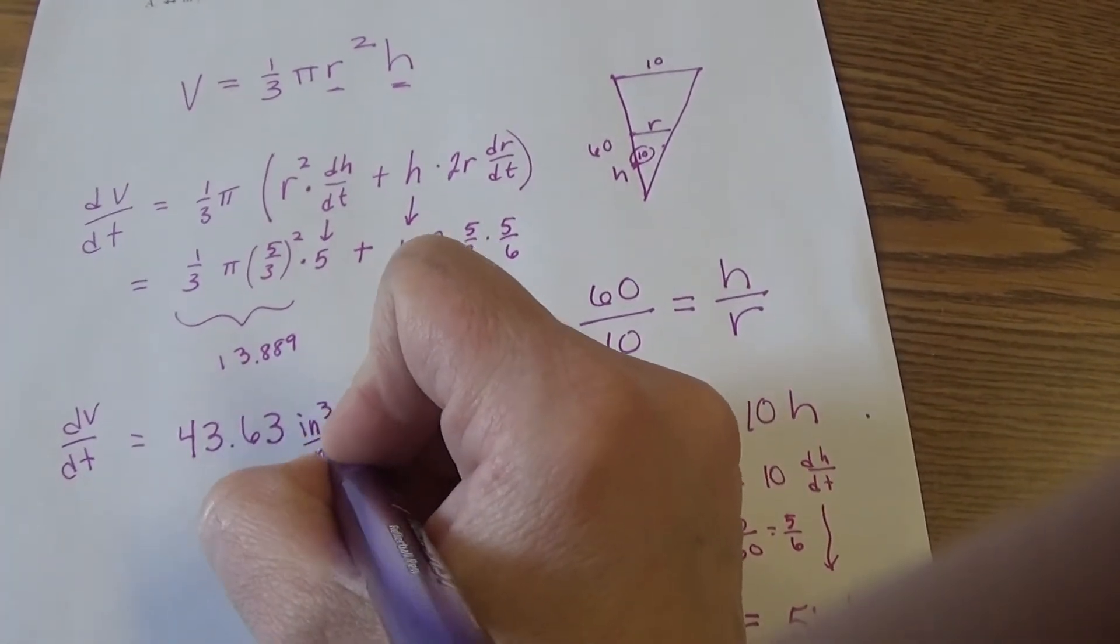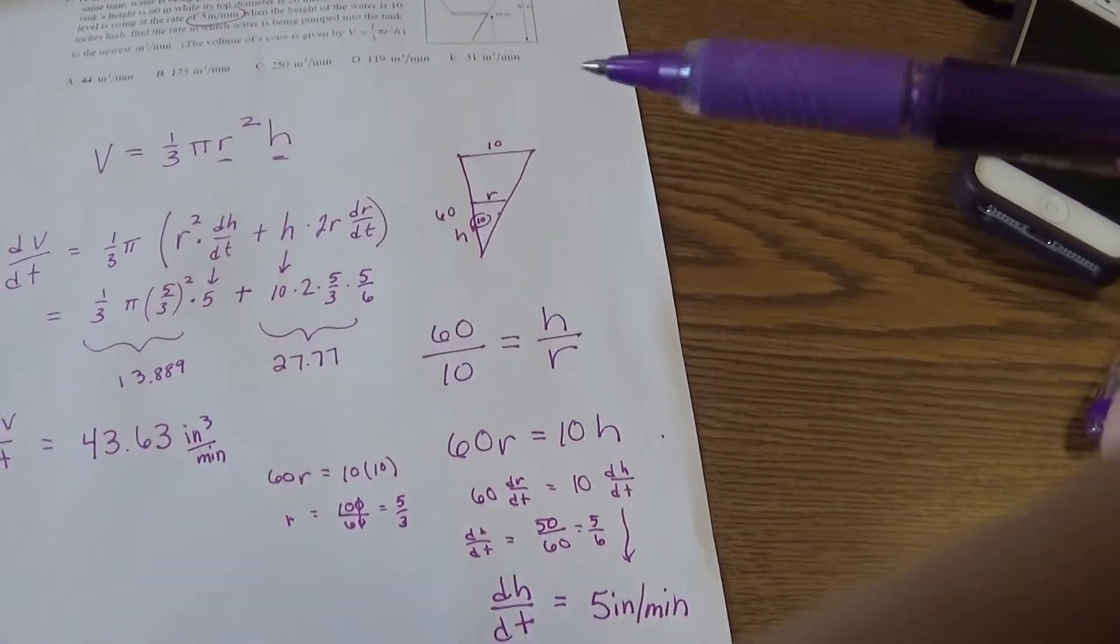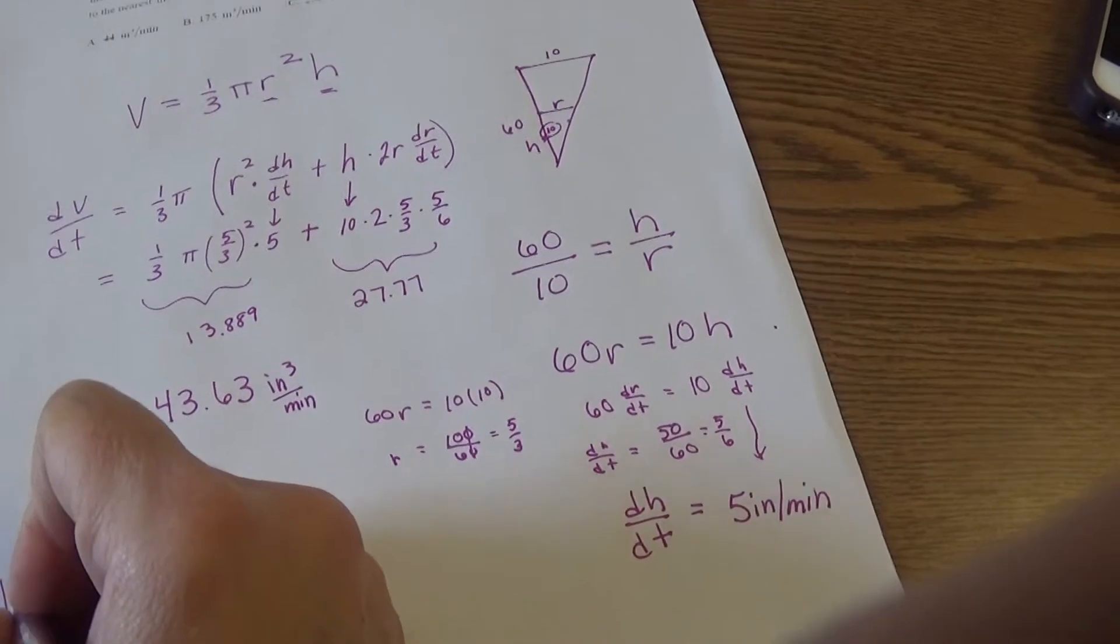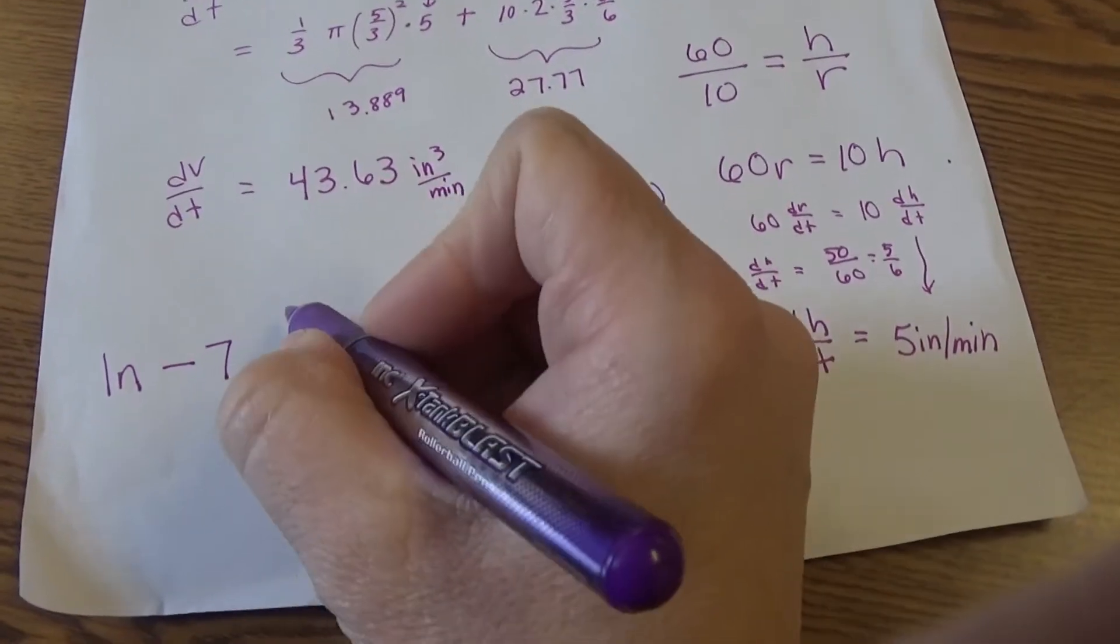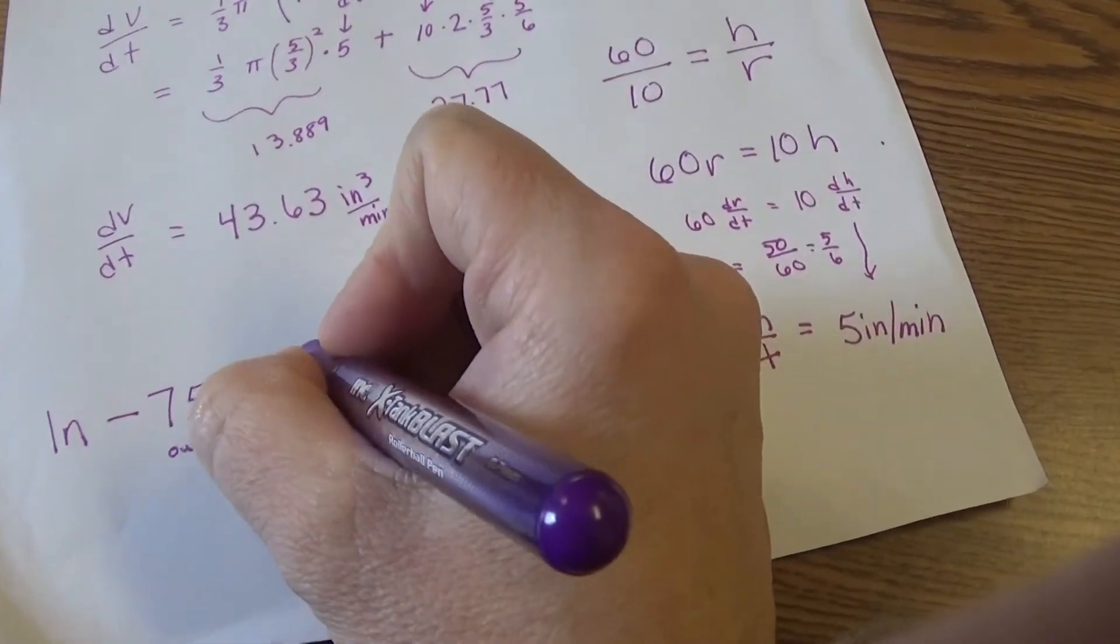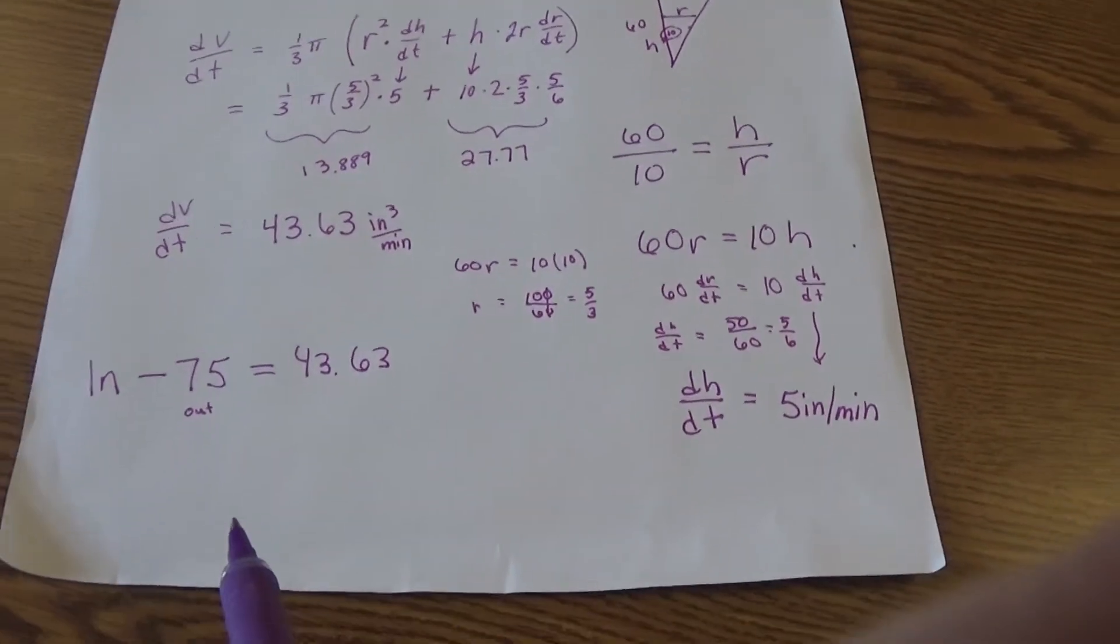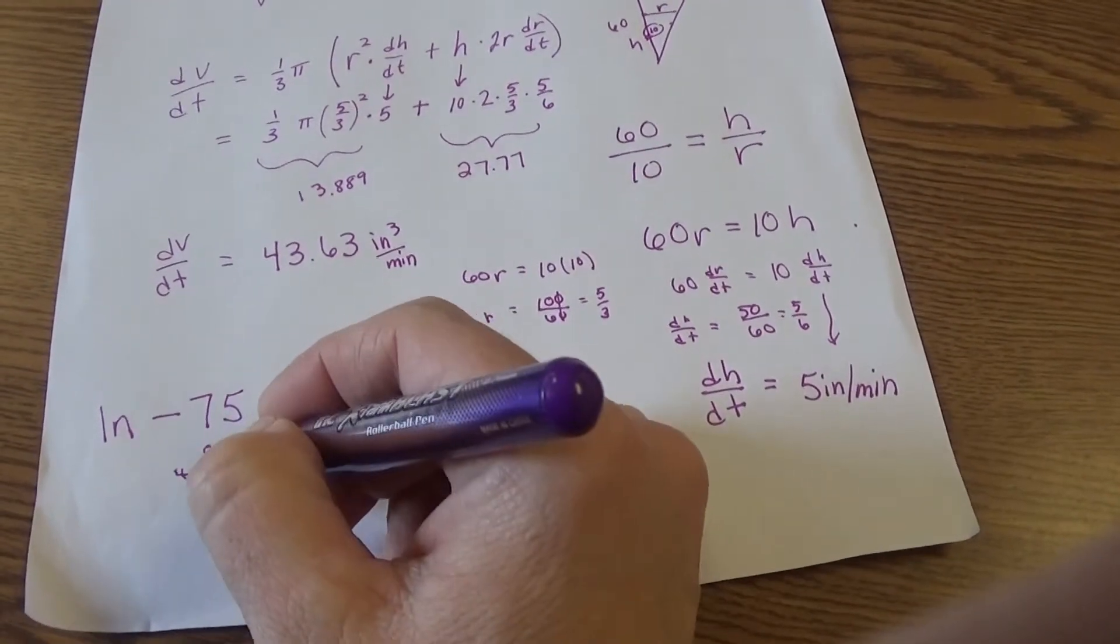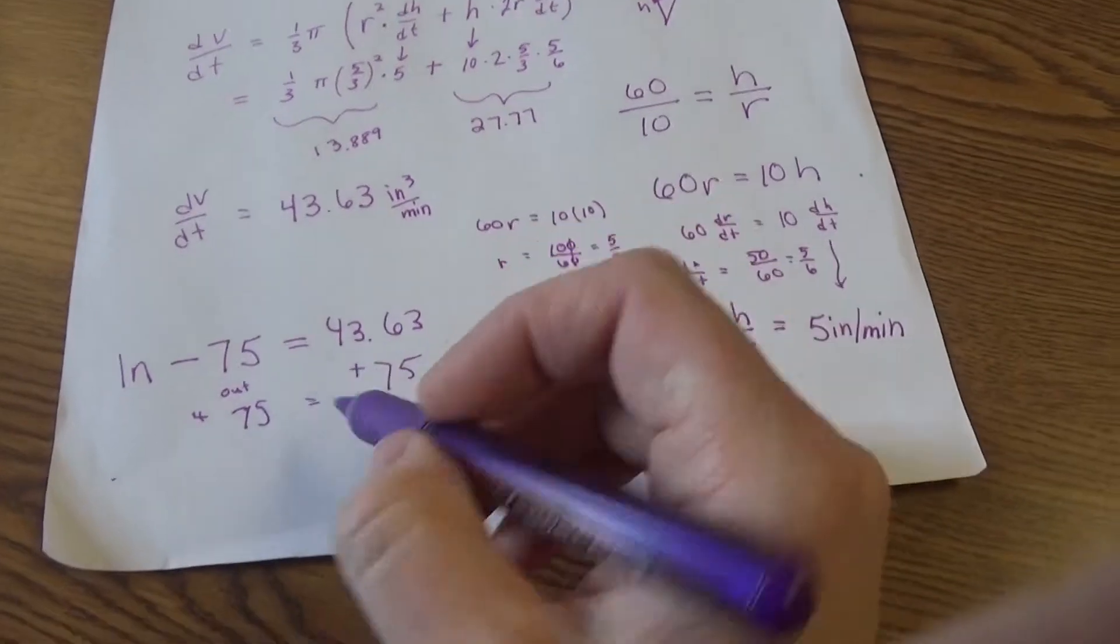So the volume is increasing currently, even though 75 inches cubed per minute is coming out. The way I was thinking of this is: if I put the in minus the 75 that's coming out, I know that the result is 43.63. That might be the connection you really watched the whole video just to find out. But the good thing is now I know the result, I know what was coming out. All I have to do is add 75 to each side here.